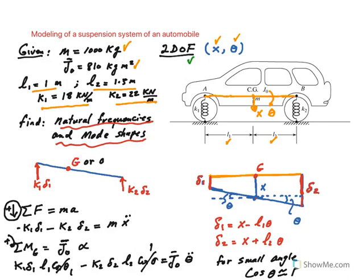This is how we're going to start. If this is our reference line, we said that the center of gravity is going to go down by x and then rotate by angle theta. So delta_1 is how much spring 1, the front spring, is going to get compressed and similarly delta_2 is how much spring number 2 is going to get compressed. Now we know that for small angles...